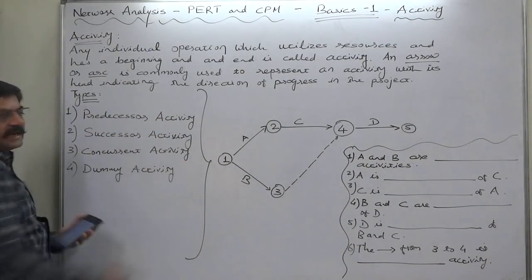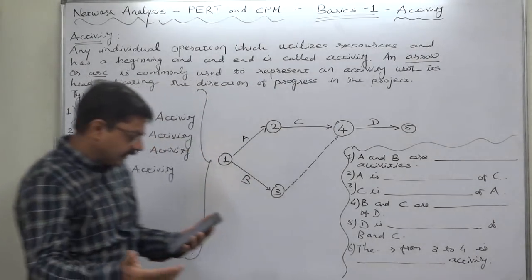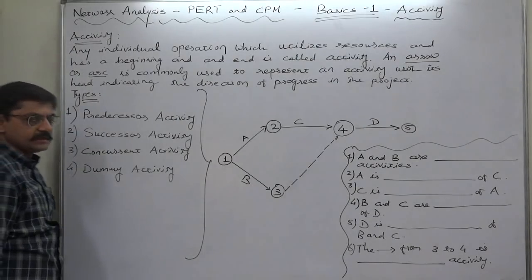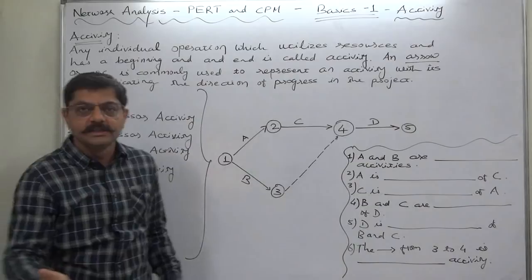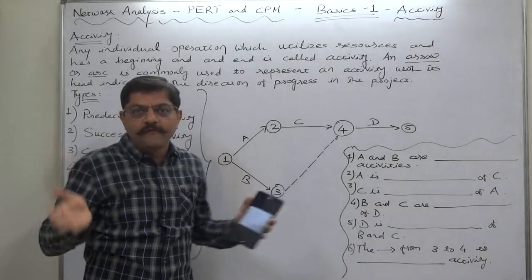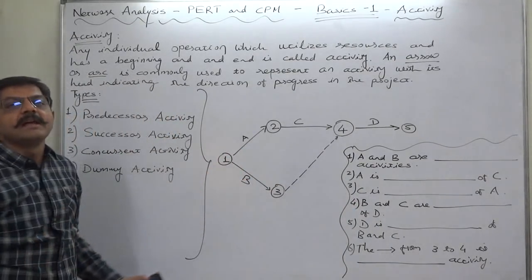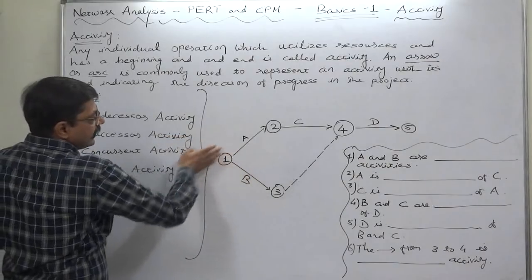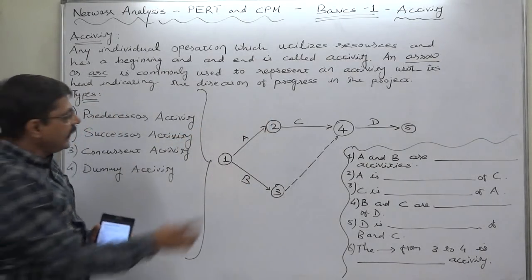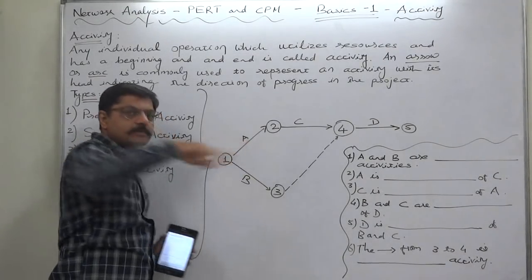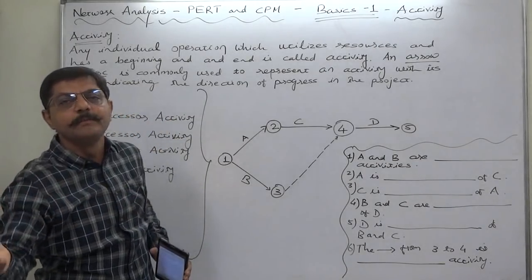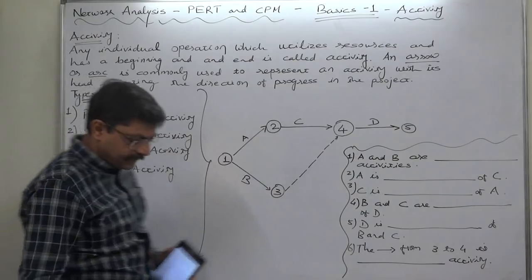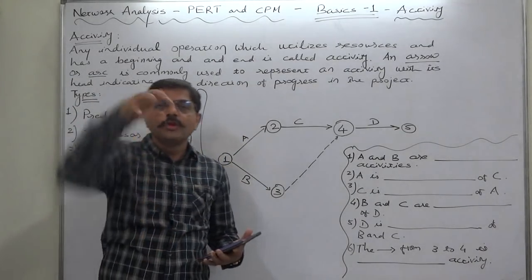The third type is concurrent activity. Concurrent means to go simultaneously. Activities which can be accomplished concurrently are known as concurrent activities — various works or functions on two or more activities going simultaneously. In this diagram, A and B are running simultaneously: persons working on activity A and other persons working on activity B at the same time — both going concurrently. So A and B are called concurrent activities.